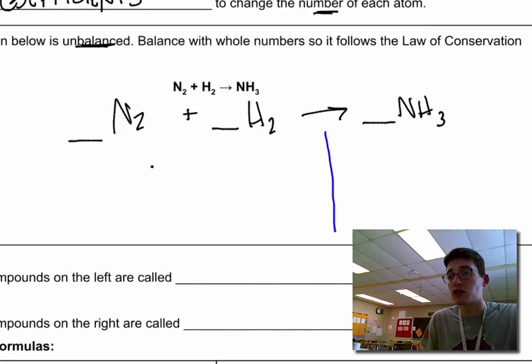And on the left side of the line, we're going to have our reactants. So we have nitrogen and hydrogen. On the right side of the line, you should have the same atoms. We have nitrogen and hydrogen.